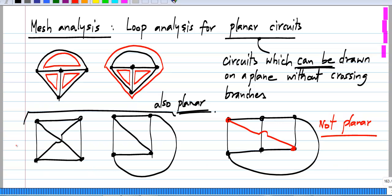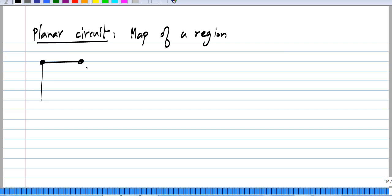The mesh analysis I am going to describe will apply only to this type of circuits. Another way to think about it is that a planar circuit is like the map of a region, map of a country which can be drawn on the plane, and you will not have boundaries crossing each other. Any branch will be common to at most two of these regions or two of these states.